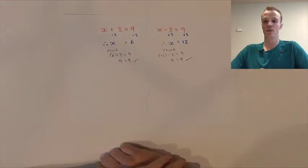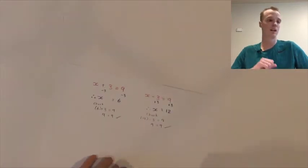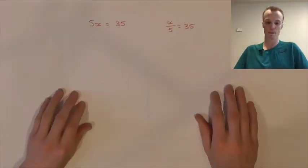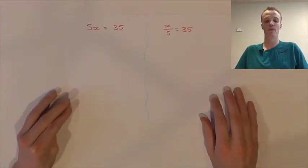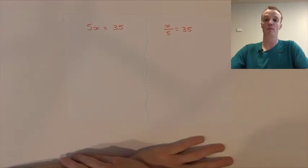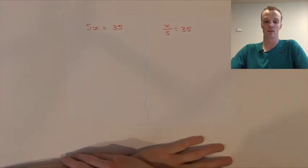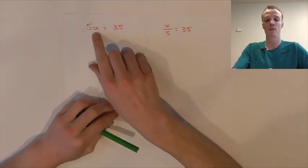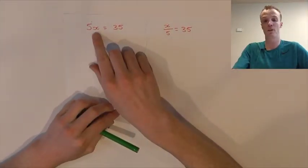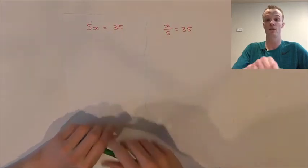And that's our first two core skills for solving these equations. Next, we're going to look at what happens when we've got multiplication and division. We've got 5 multiplied by our pronumeral x equals 35.